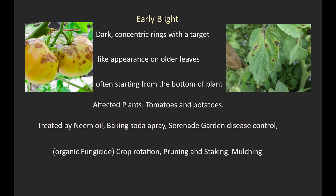3. Early blight. Symptoms: dark, concentric rings with a target-like appearance on older leaves, often starting from the bottom of the plant. Affected plants: tomatoes and potatoes. Treated by neem oil, baking soda spray, Serenade Garden Disease Control organic fungicide, crop rotation, pruning and staking, and mulching.